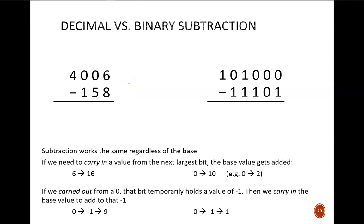Think back to ten years ago or so when you were learning how to do longhand subtraction in decimal. Those problems were always trickiest when you had a minuend holding a zero that then was carried out from. Let's look at this left example in decimal. In that first column, 6 is less than 8, so we need to carry in a 1 from the next column over.